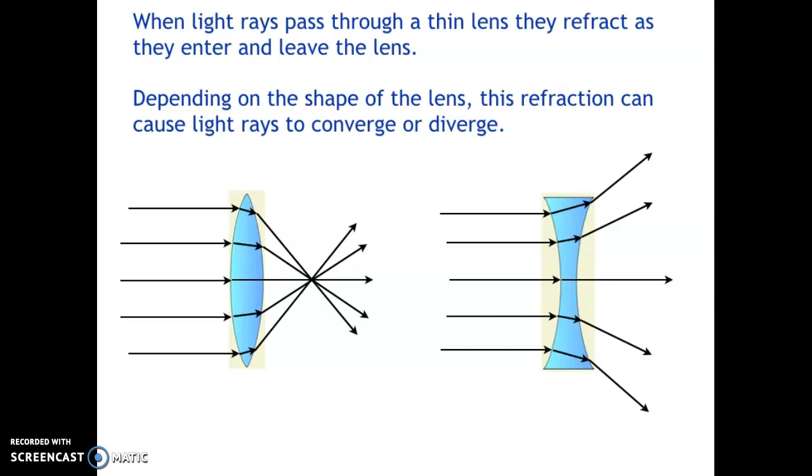Depending on the shape of the lens, this could cause light rays to converge, or it could cause light rays to diverge. This bending is, of course, described by Snell's Law.